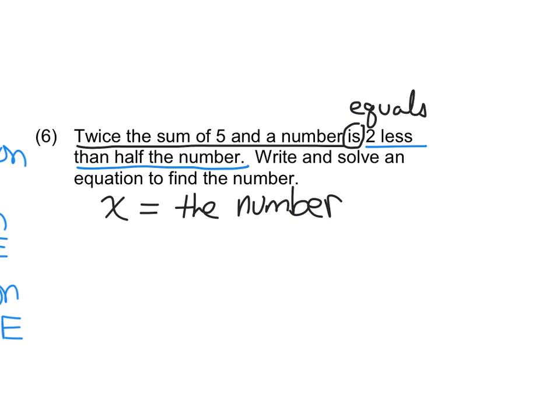All right, so twice the sum of five and a number. So what do we say there? What does twice the sum of five and a number look like, algebraically? Two parentheses five plus X. Boom. Shakalaka. Equals. All right, because again, it's twice this sum. So the sum has to happen before you can do the twice part. All right, why equals.